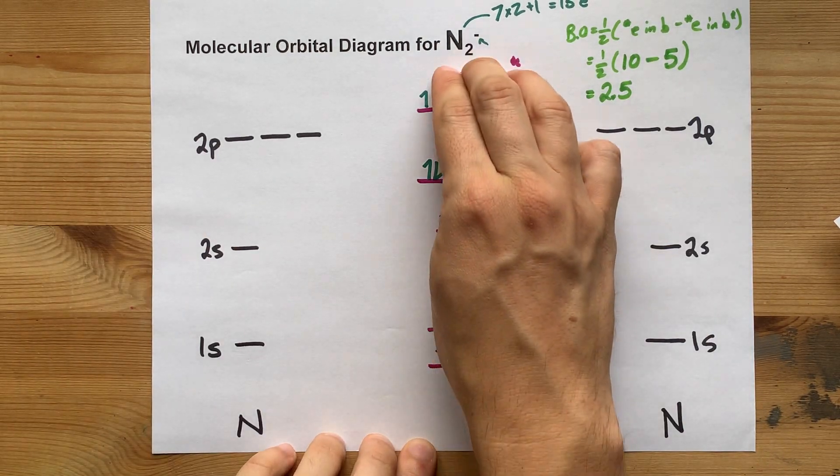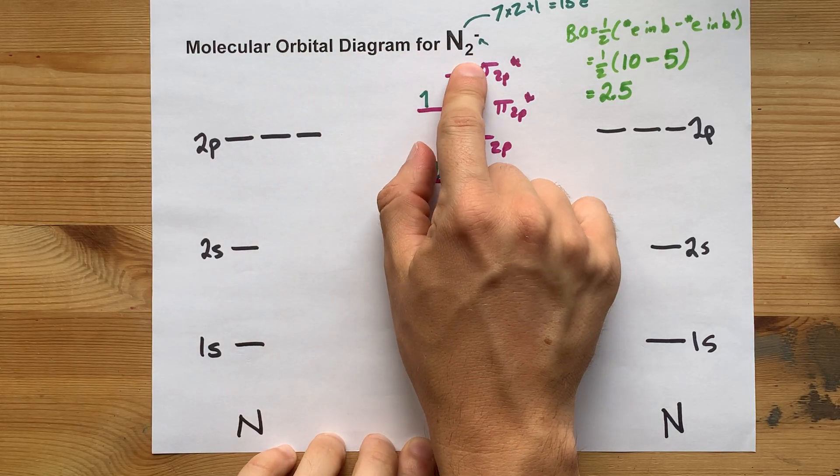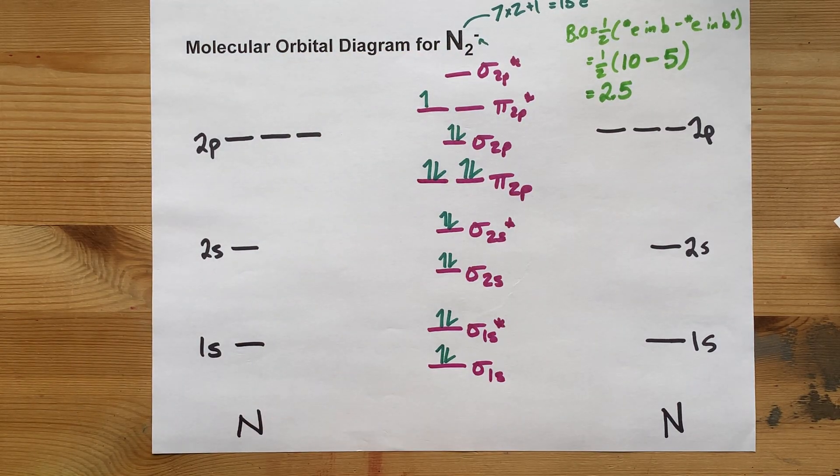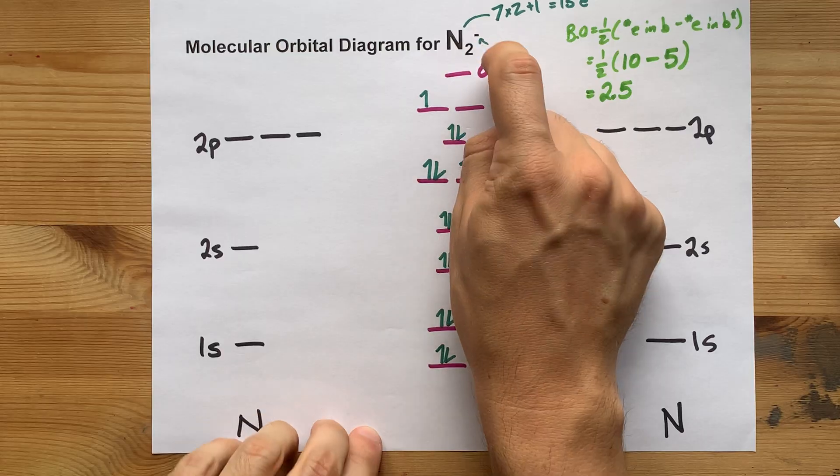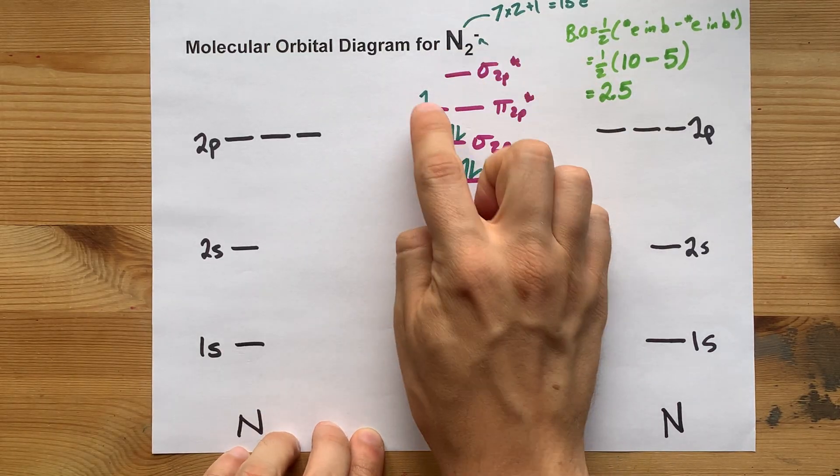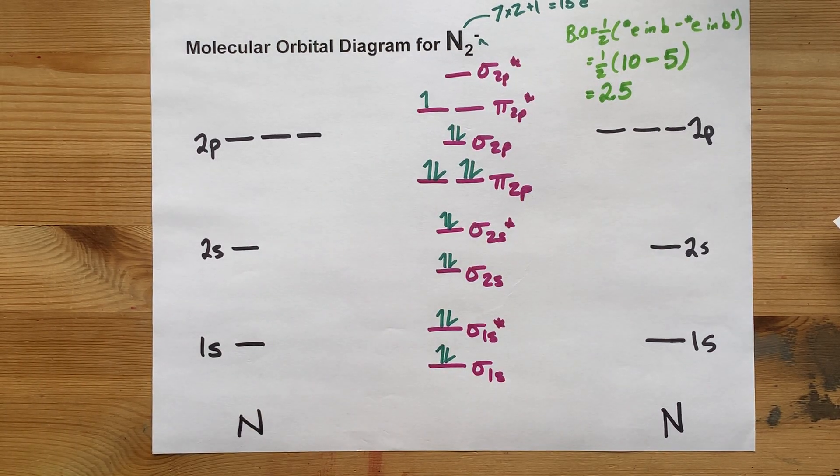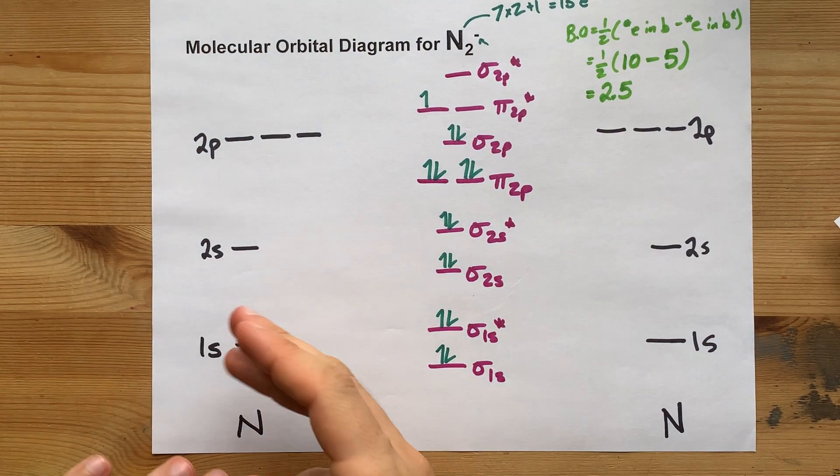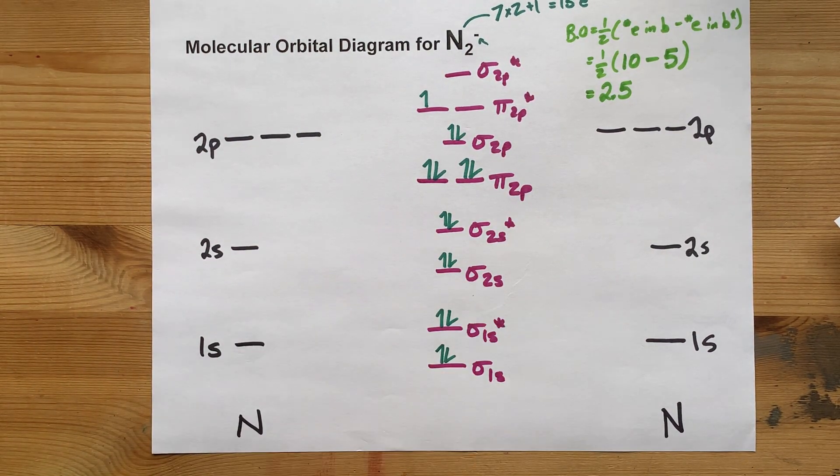Congratulations. This is the completed molecular orbital diagram for N₂ with a minus 1 charge. The only way N₂ with any other charge would differ is in how many of these green arrows I have. Congratulations. You did it with me. Best of luck.